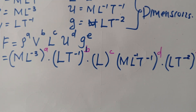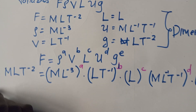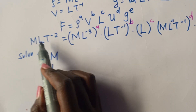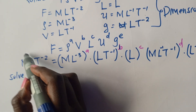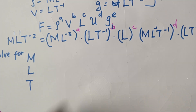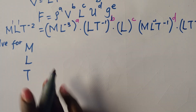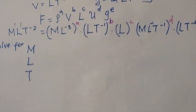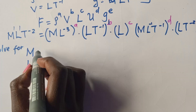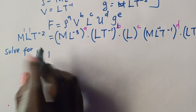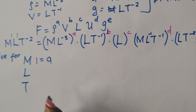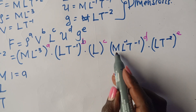Now solve for M, L, and T from the left-hand side. For F, the powers are: M raised to 1, L raised to 1, T raised to negative 2. Starting with M: the left-hand side gives M¹, equal to M raised to A from rho, plus M raised to D from mu. So: 1 = A + D.